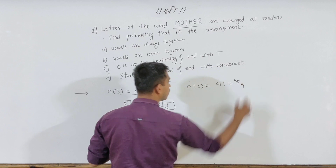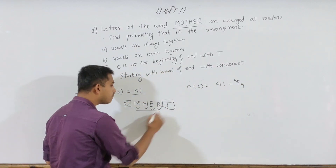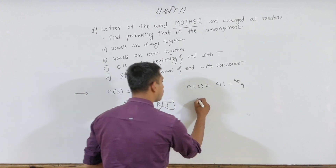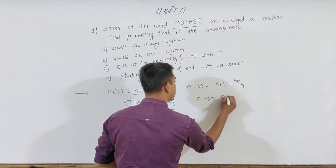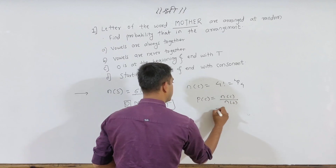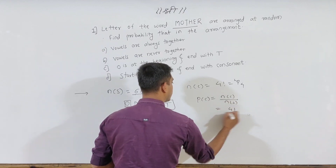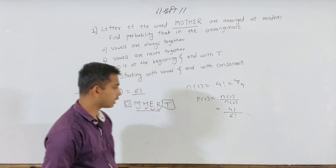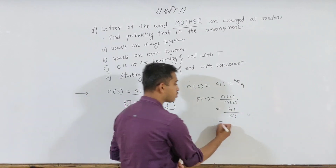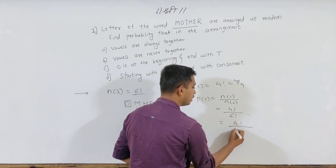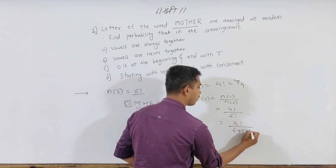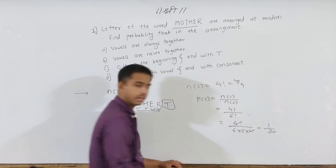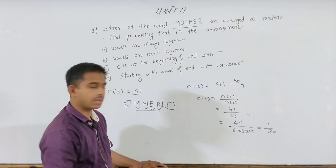So n(C) = 4P4 = 4 factorial. Therefore P(C) = 4 factorial divided by 6 factorial, which simplifies and gives 1 over 30. So the calculation gives us 4!/6!.